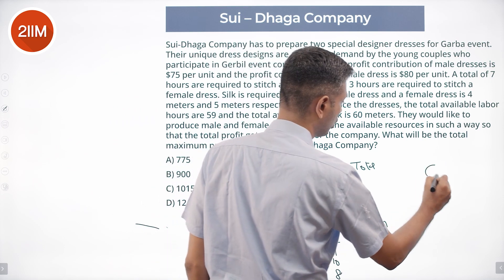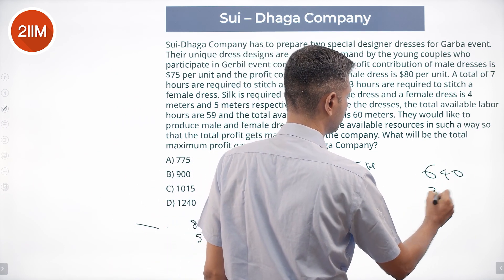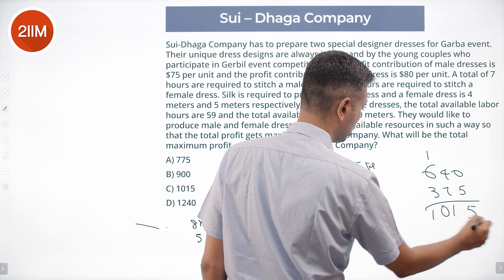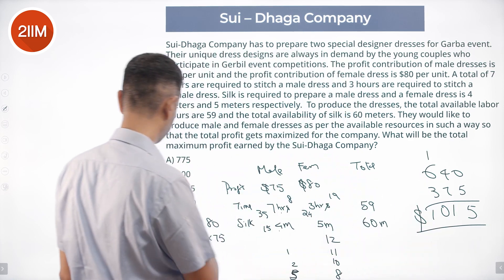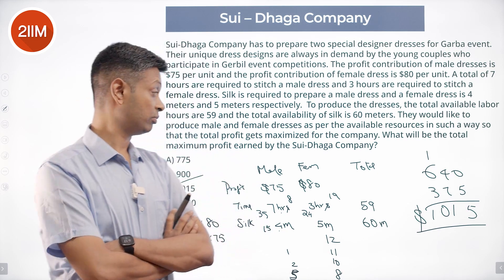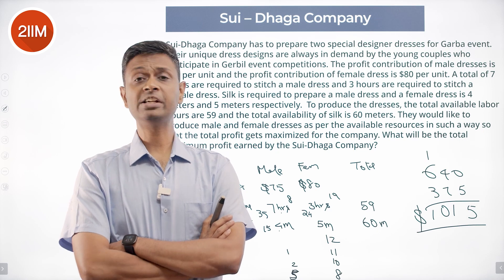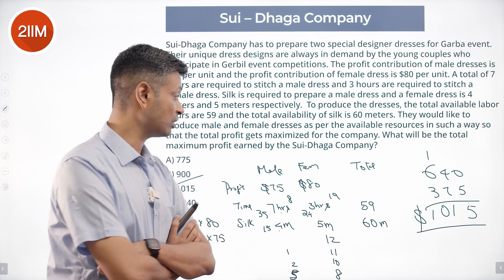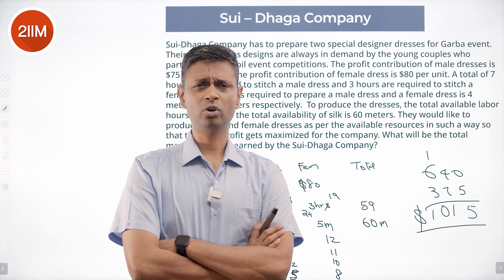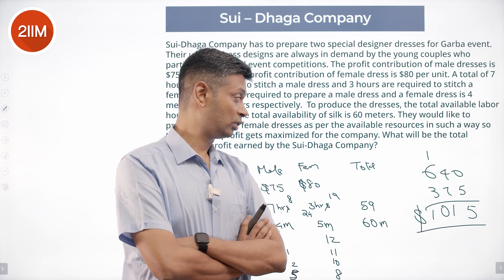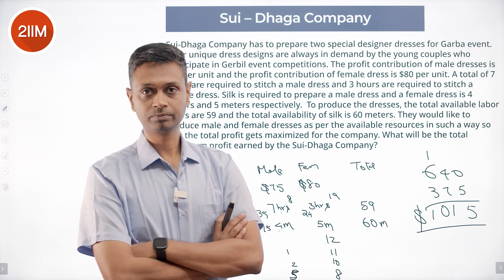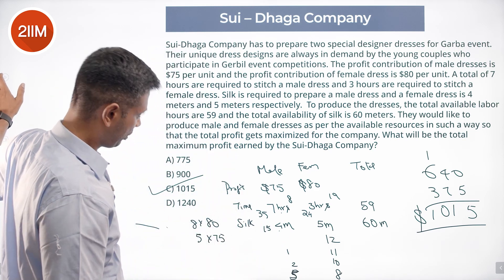Profit calculation: 8 female dresses at $80 each gives $640. 5 male dresses at $75 each gives $375. Total profit is $640 plus $375 equals $1,015. I'm very confident this is the answer because I'm using all 59 hours and all 60 meters of silk — nothing goes to waste. Any other combination would waste some resource, so $1,015 is the maximum profit.